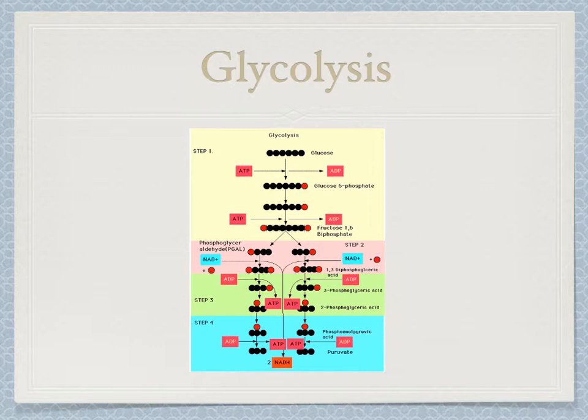Redox reactions then convert NAD+ to NADH, adding another phosphate to each of the molecules. They now both have two phosphates attached to either side. Then two enzymes, each with two active sites, convert ADP to ATP by removing the phosphates off of each 3-carbon molecule. This is called substrate-level phosphorylation.